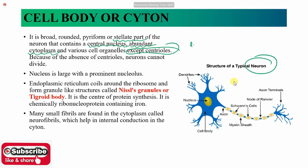It has less regeneration power — or no regeneration power. Why does this not happen? It does not happen because of the absence of centrioles. Centrioles are very important to perform cell division. This cell does not have centrioles, so it does not divide. Neuronal cells are mature — they cannot divide further.